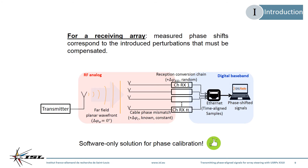To address this issue for a receiving array, we accepted the constraint of placing the transmitter aligned with the array before measurement. In this case, no phase shift is induced by the transmitter position, so the observed phase shifts between digitized signals correspond only to the ones we want to suppress. We can simply measure and compensate for them in software. This allowed us to code a software-only phase calibration algorithm that enabled the commercial USRPs to properly steer antenna arrays after calibration.